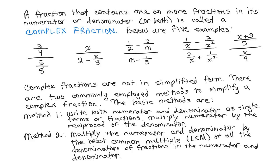The first example has three-fourths over five-eighths, so it has a fraction in the numerator and a fraction in the denominator. The second one has x alone in the numerator, but in the denominator there are two terms — two minus x over three, so there's a fraction there. And as you can see from the third, fourth, and fifth examples, I have fractions in both the numerator and denominator.